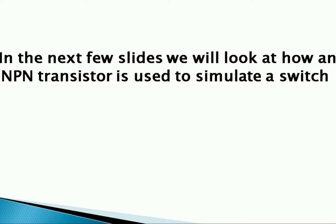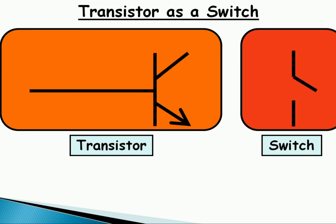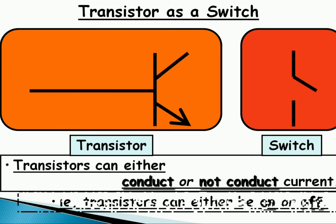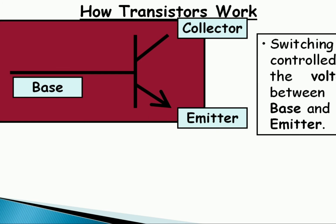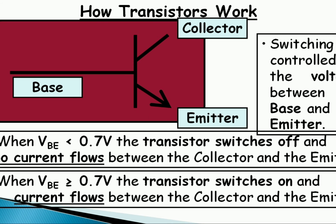Here on the left side is a transistor and on the right side is a switch. Base, collector, and emitter — that is the transistor. Switching is controlled by the voltage between the base and the emitter. When the voltage of base to emitter is less than 0.7 volts, the transistor switches off — that means no current flows between the collector and the emitter. But when the base voltage is greater than or equal to 0.7 volts, the transistor switches on and current flows between the collector and the emitter.